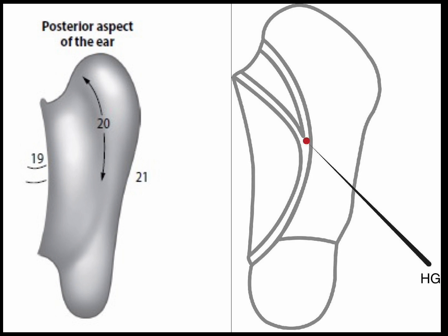Now let's go to the posterior aspect of the ear. The root of the auricle, or ear root, is a depression on the posterior aspect of the ear, just above the tendinous flap that connects the auricle to the head. Then we have the hypertension groove, or HG — a groove-like depression formed by the posterior border of the helix, running in the upper third of the groove on the posterior aspect of the ear. The posterior aspect of the ear proper refers to the rest of the back of the ear.